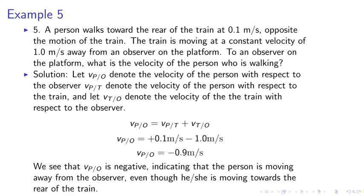Solution. Let VpO denote the velocity of the person with respect to the observer, Vpt the velocity of the person with respect to the train, and Vto the velocity of the train with respect to the observer. Use the equation, velocity VpO equals Vpt plus Vto. So Vto is 1 meter per second moving away, and Vpt is negative 1 meter per second moving away.